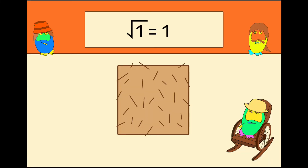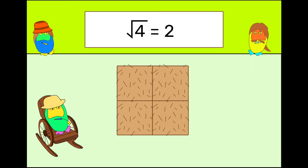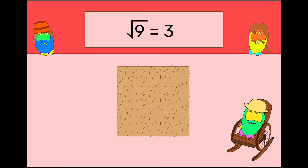The square root, well that's the inverse fact, is what you multiply by itself to give you that.